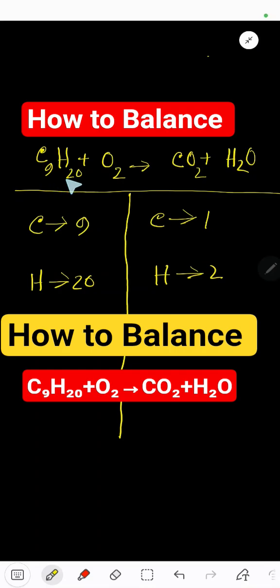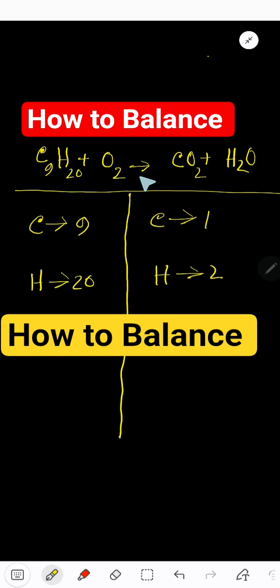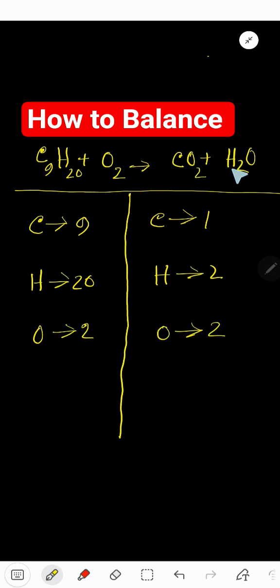How to balance the combustion reaction of nonane: C9H20 plus oxygen that produces carbon dioxide plus water. On the left-hand side we have nine carbon atoms, 20 hydrogen atoms, two oxygen atoms. On the right-hand side we have one carbon atom, two oxygen here, two hydrogen, we have one more oxygen, so totally we have three.